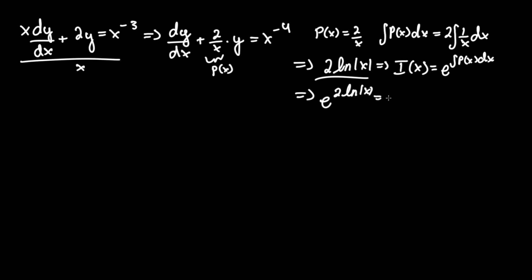Rearranging, that becomes e^(ln|x^2|). Now that we have e and ln next to each other, those cancel. So the integrating factor I(x) = x^2.